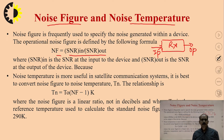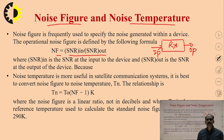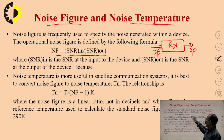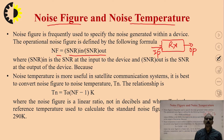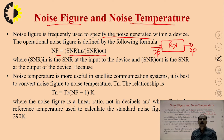The input SNR will always be high because high SNR means signal power is high and noise power is low. Similarly, when SNR at the output is high, the noise figure will be 1 or less than 1. So the noise figure value should always be 1 or less than 1. Noise figure is frequently used to specify the noise generated within a device, and the operational noise figure is defined by the following formula.